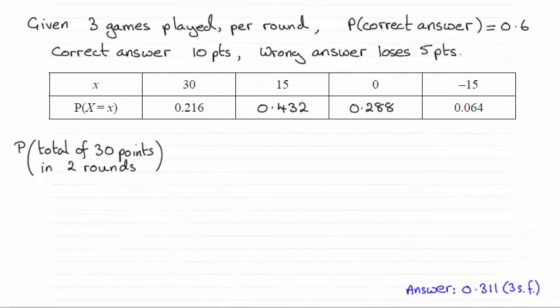Hi there. Now for this question we're asked to find the probability that a total of 30 points is scored in two rounds.